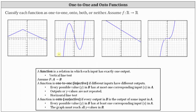An easy way to determine whether a function is one-to-one is to use the horizontal line test. If we pass a horizontal line across a function and it never intersects the graph in more than one point, then the graph does represent a one-to-one function. If it does intersect the graph in more than one point, then it's not one-to-one.